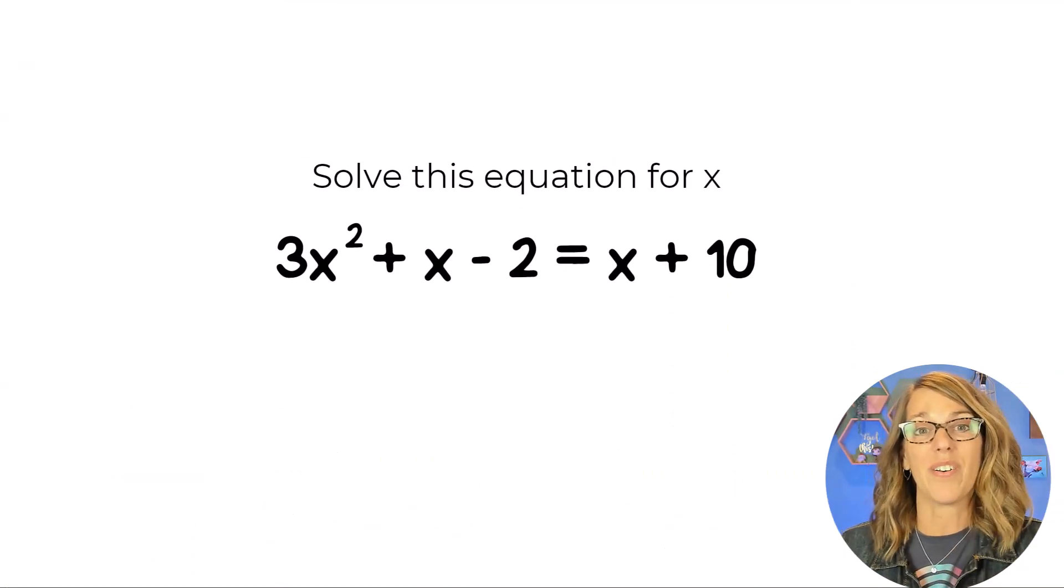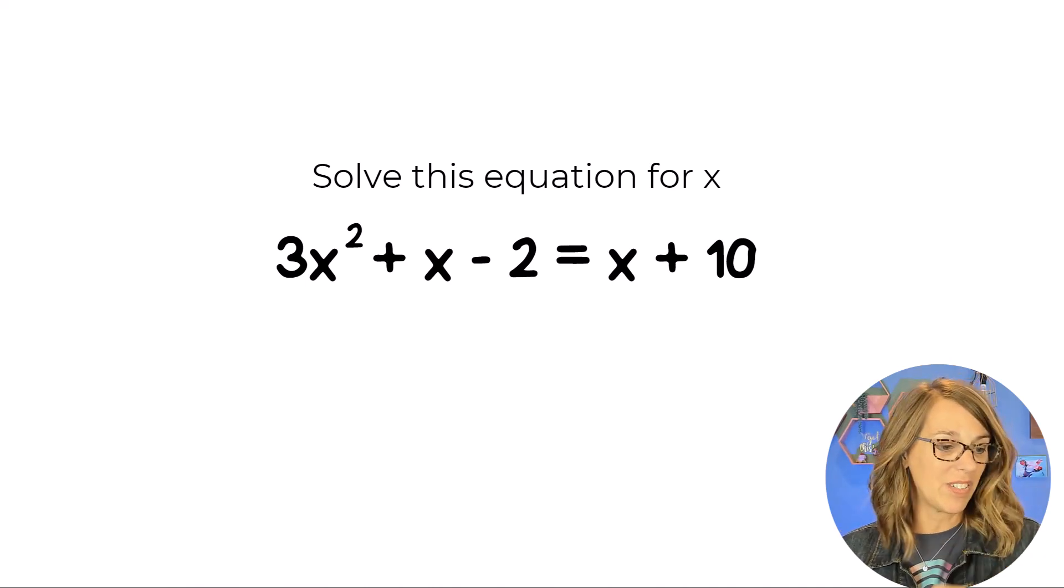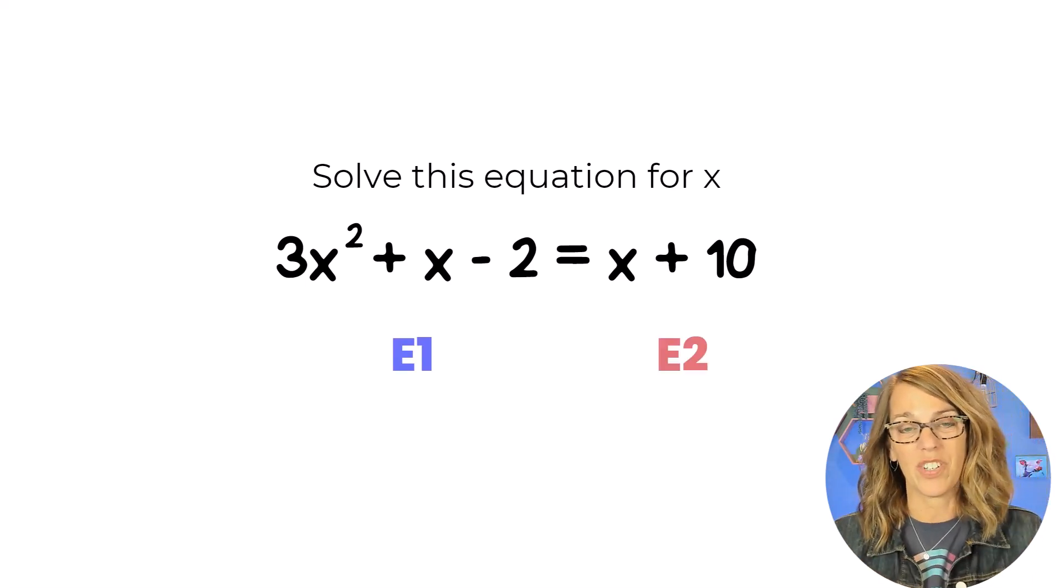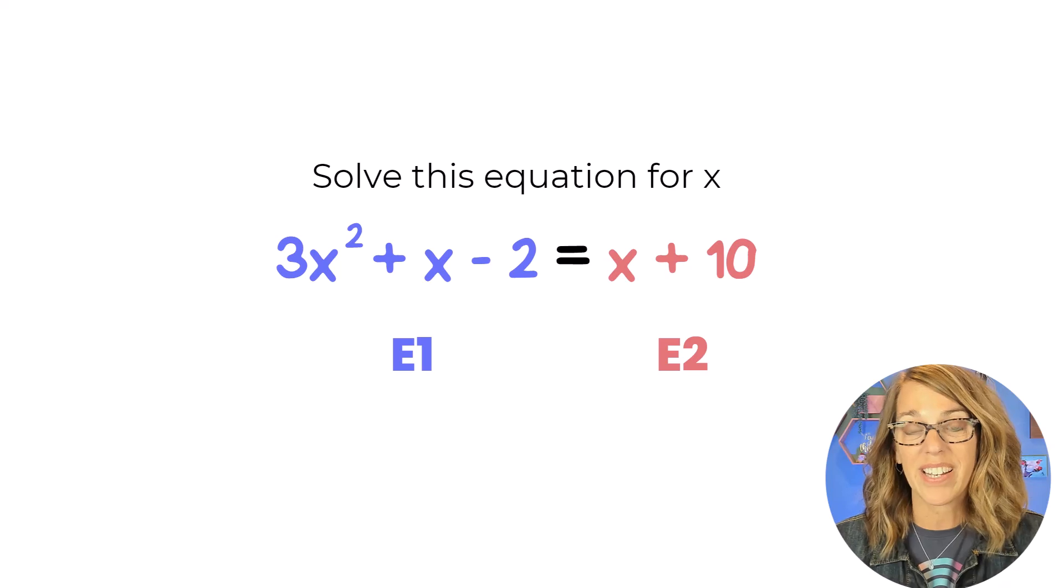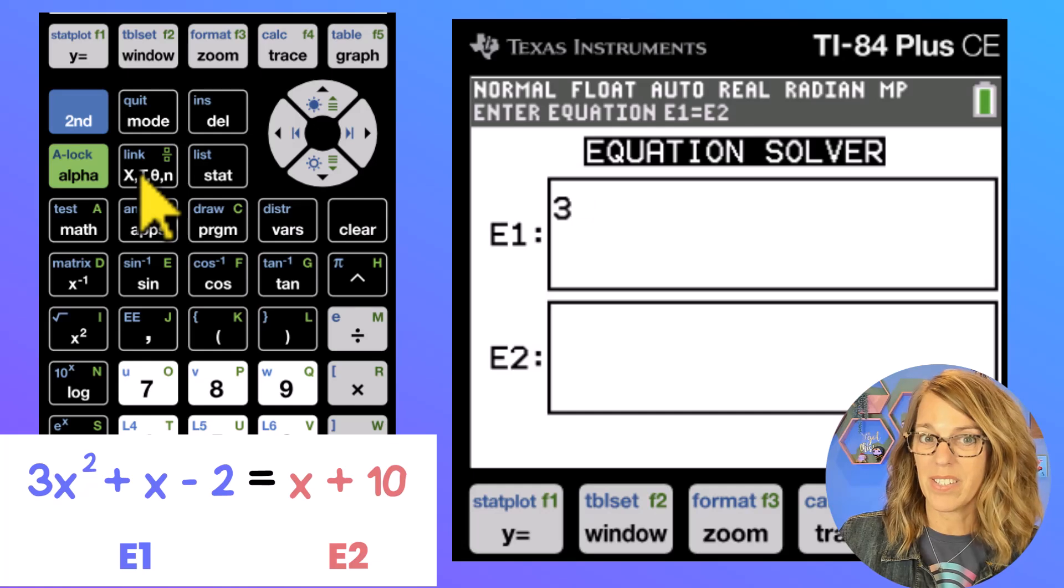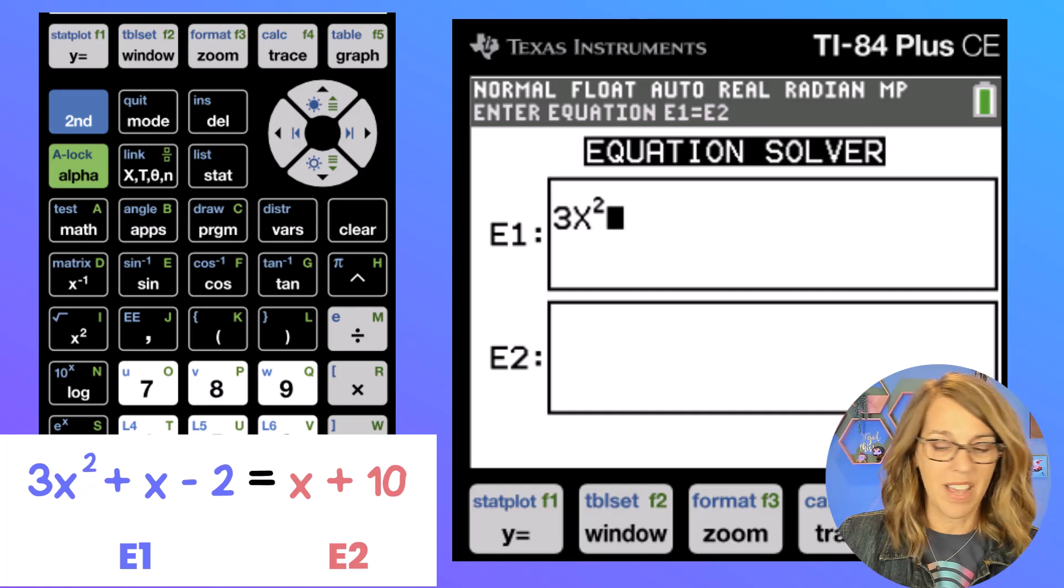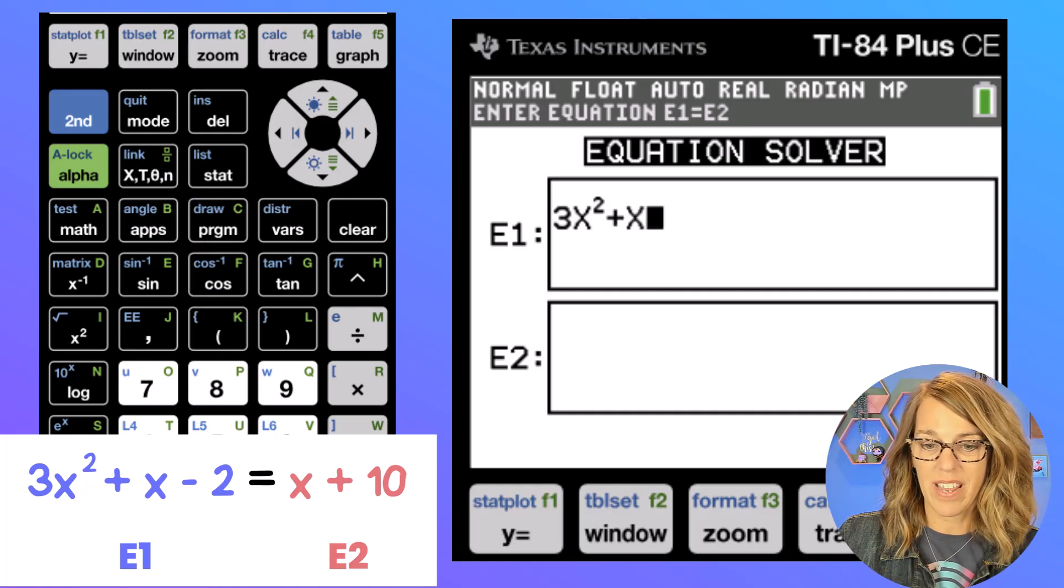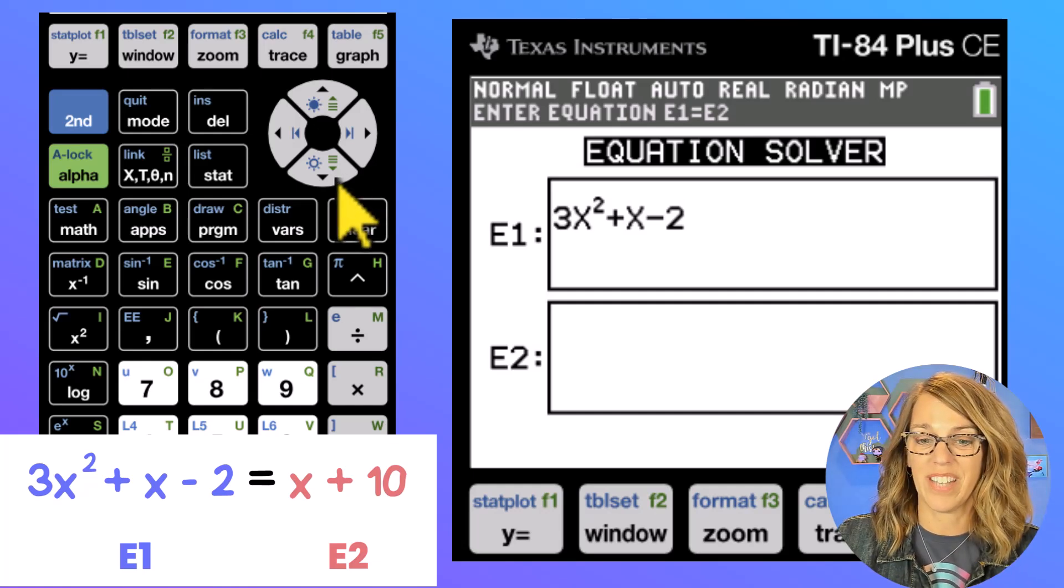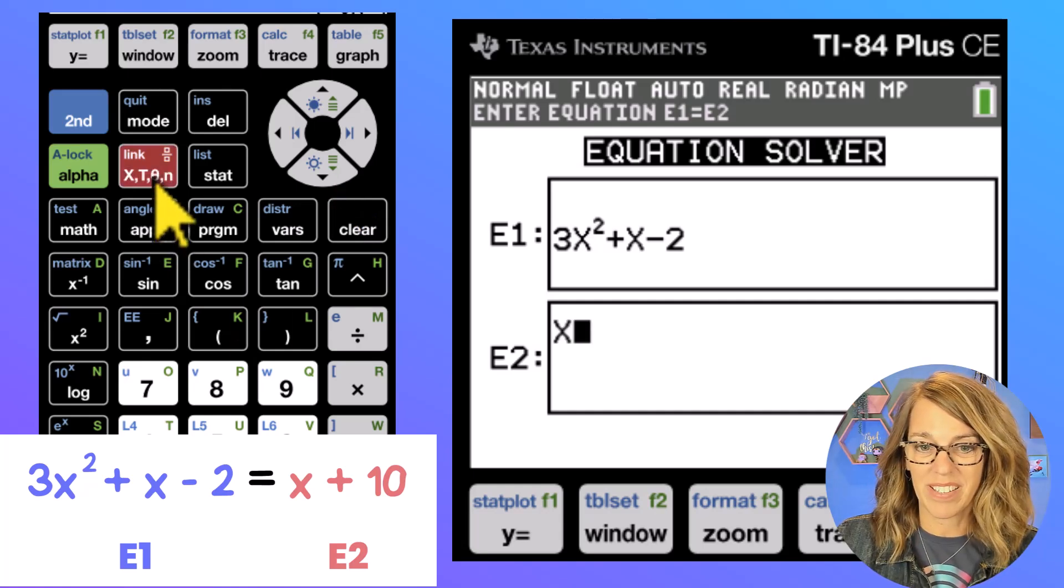Now let's say that I want to solve this equation. We've got 3x² + x - 2 = x + 10. So the equation 1 and the equation 2 are really those two sides of the equation. Let's go ahead and type this in. So I'm going to go 3, I'm going to hit my x variable, I'm going to hit my squared and then I want plus x. So plus x minus 2. This is the first equation or the first side. Let's arrow down.